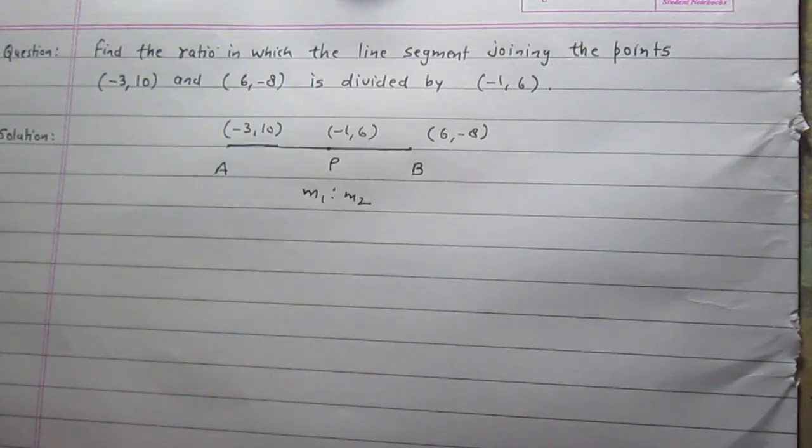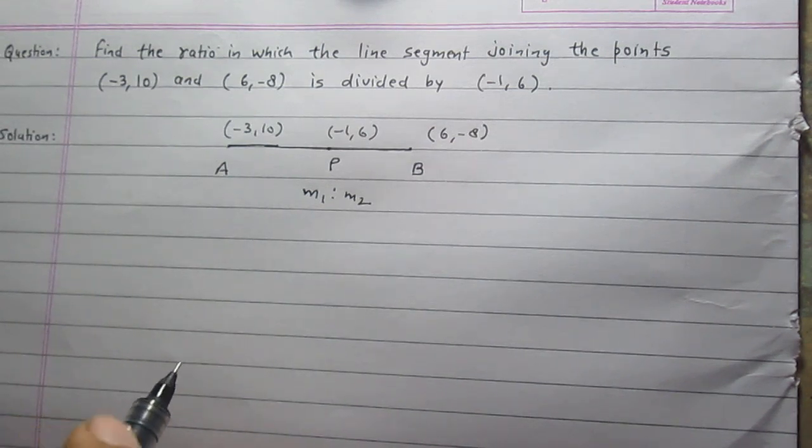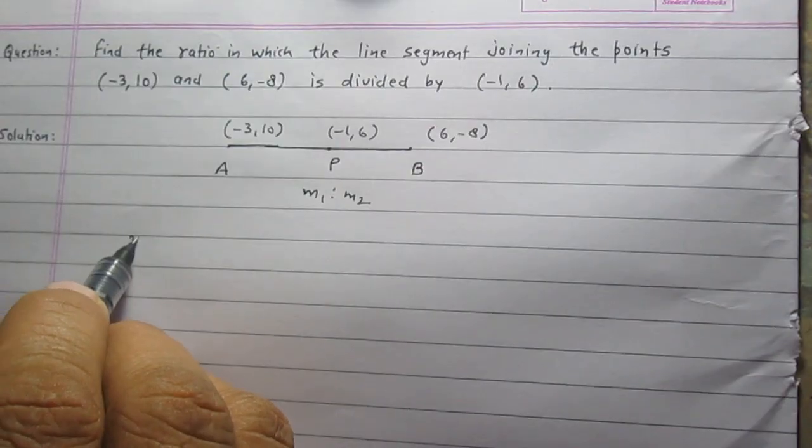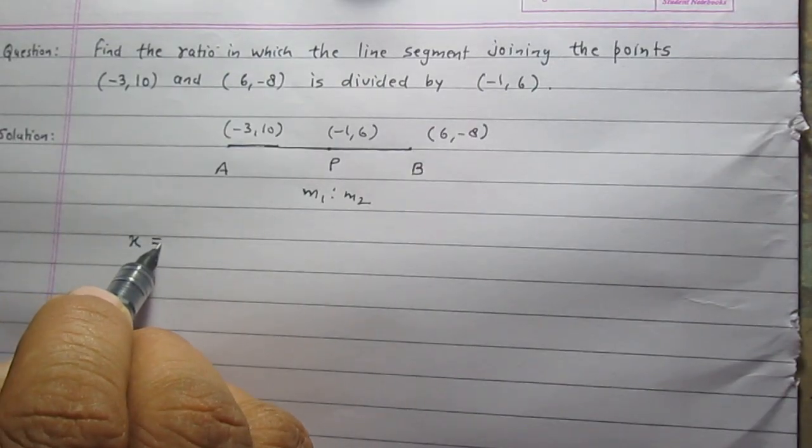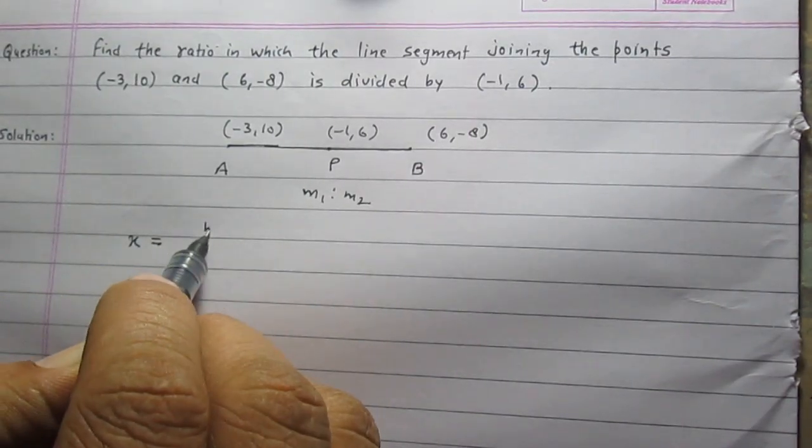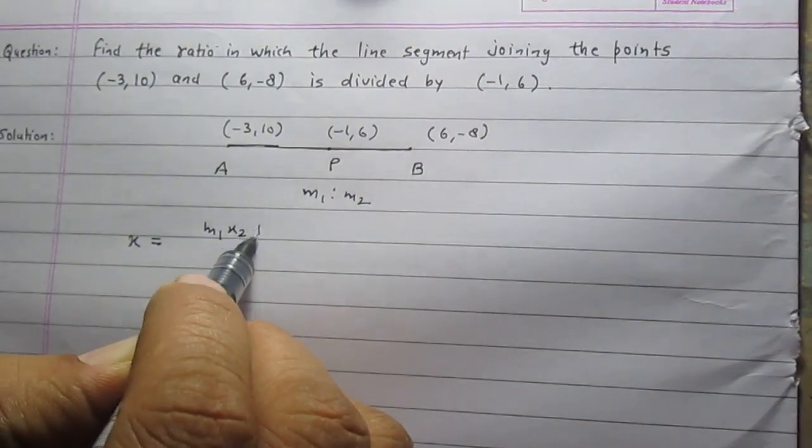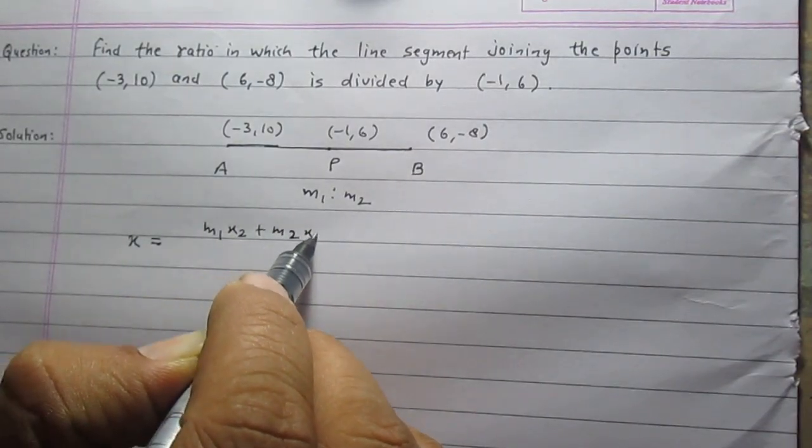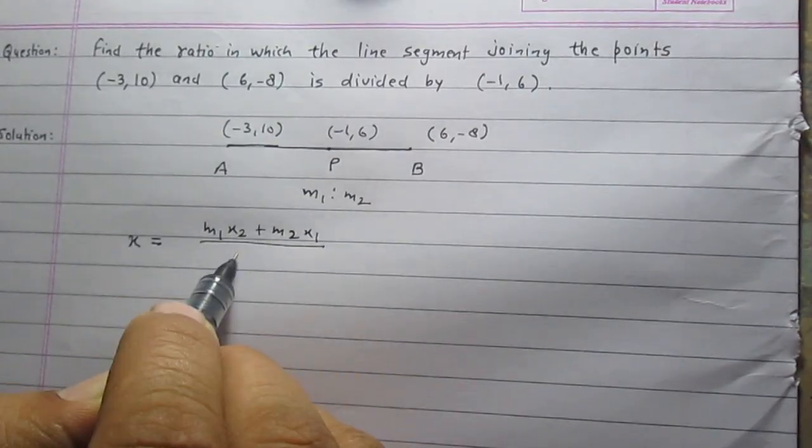The ratio m₁/m₂ can be found using the section formula. According to the section formula, the x-coordinate of point P is equal to (m₁x₂ + m₂x₁) divided by (m₁ + m₂).